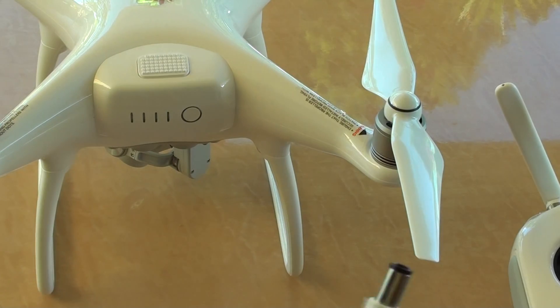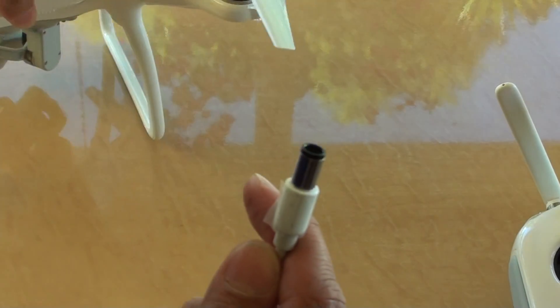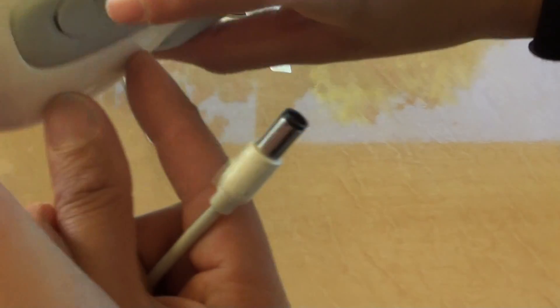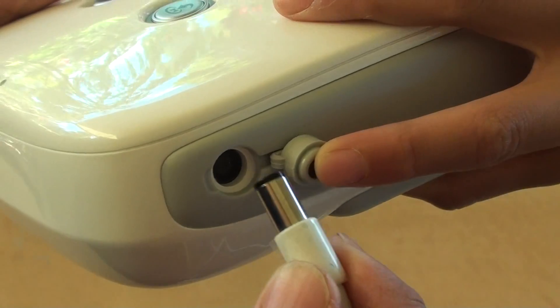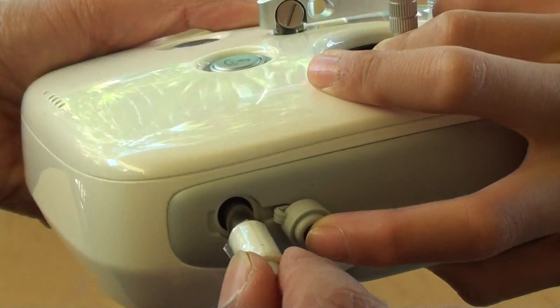The circular one goes to the remote controller. On the right-hand side, there is a cover. You need to pull out the rubber cover and then plug it in.